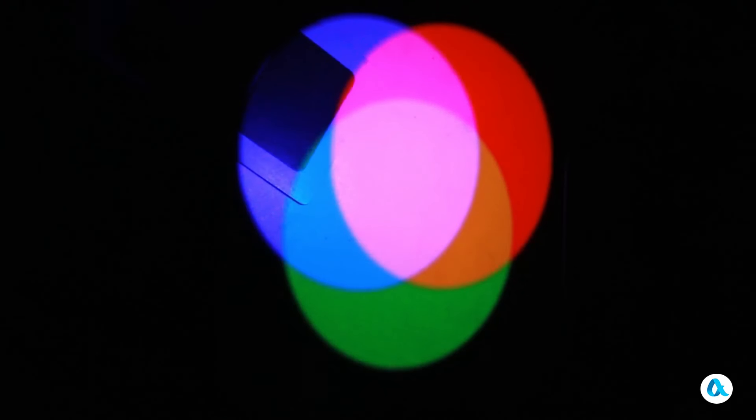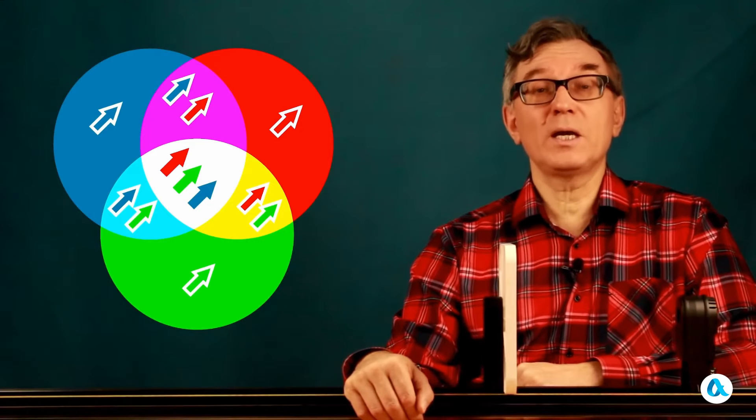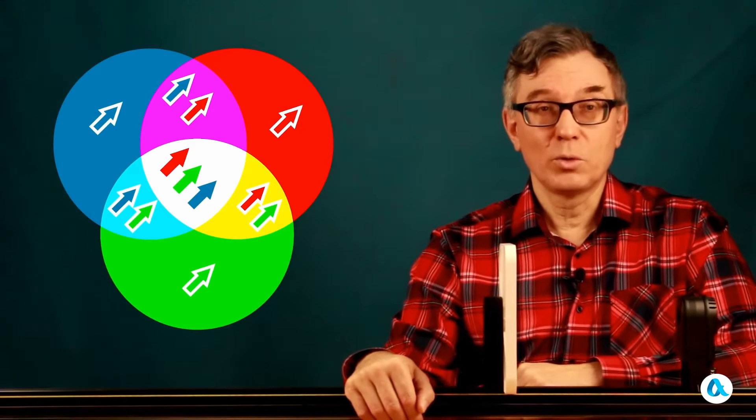Here we can observe a depiction of seven areas that we have just witnessed, along with the corresponding primary colors that originate from each of these areas we have explored.